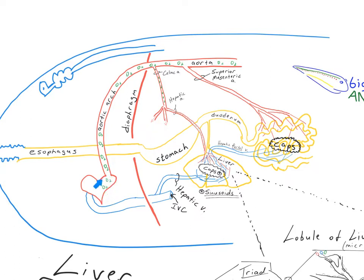The liver, like any organ, needs a supply of oxygenated blood, which is going to come from the left side of the heart, the aortic arch arching back and forming the dorsal aorta down the dorsal part of the abdominal cavity. After the aorta passes through the diaphragm into the abdominal region, the first artery off of the aorta is the celiac artery, which divides into a few different arteries including the hepatic artery, supplying the liver with oxygenated blood.